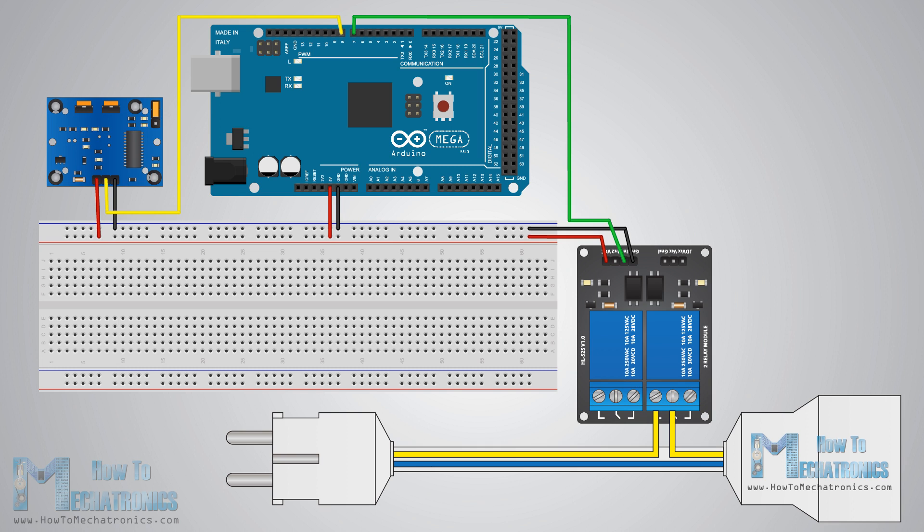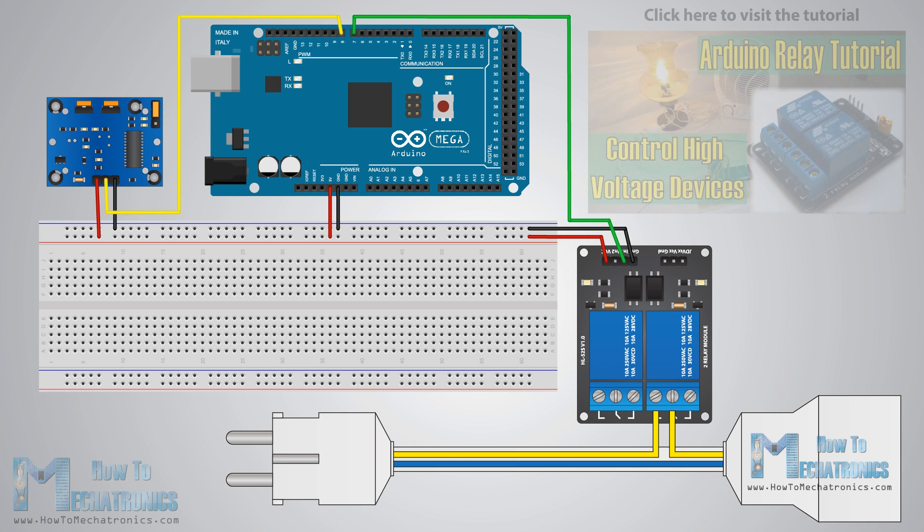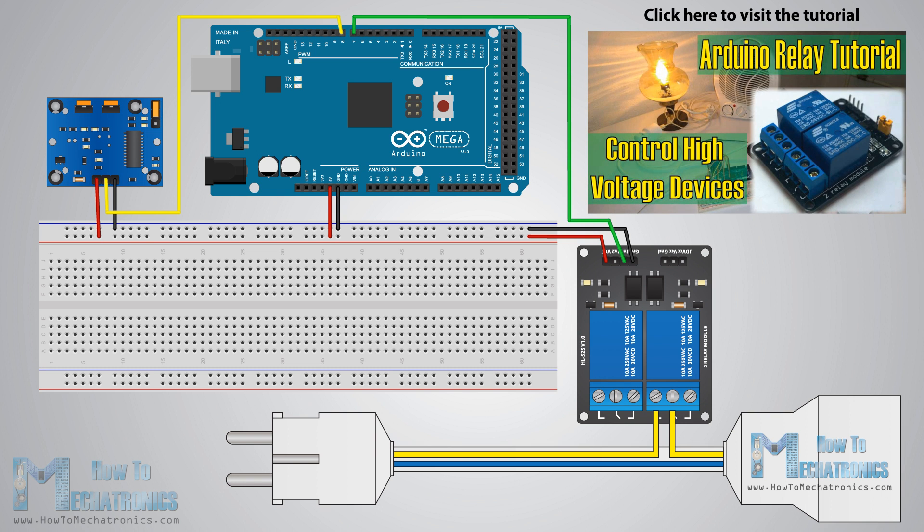The output pin of the sensor will be connected to the pin number 8 on the Arduino board and when an object will be detected, the pin number 7 will activate the relay module and the high voltage lamp will turn on. For more details how the relay module works, you can check my Arduino relay tutorial.